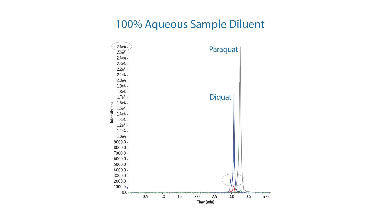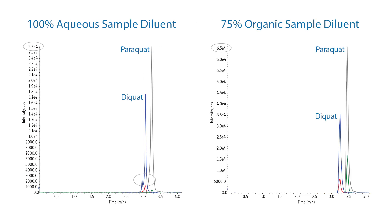Compared to sample prepared in 100% aqueous solution, the sample dissolved in 75% organic solution to match the initial mobile phase condition resulted in the chromatogram with not only better peak shape, but also increased retention and higher sensitivity.